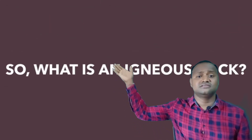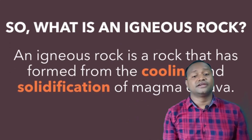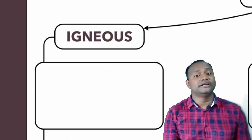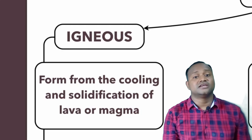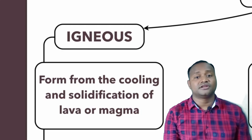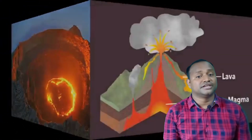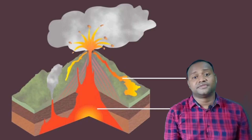Let's discuss about igneous rock. Igneous rock is formed due to the cooling down of magma or lava. The word 'igneous' is derived from the Latin word 'ignis', which means fire. That means when hot molten lava cools down, it forms igneous rock.